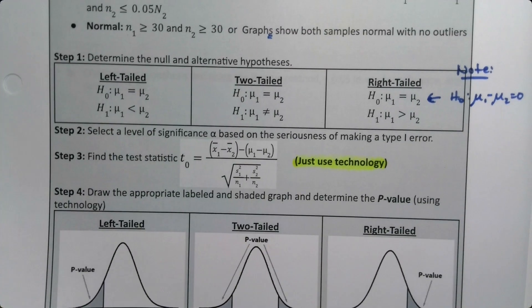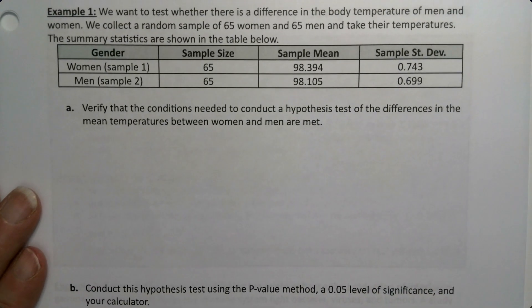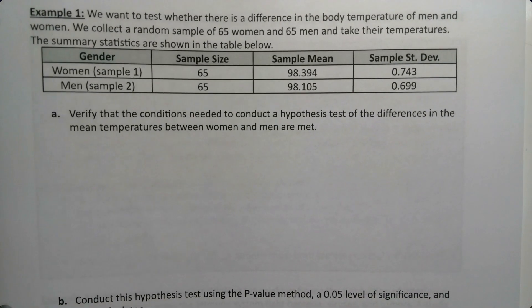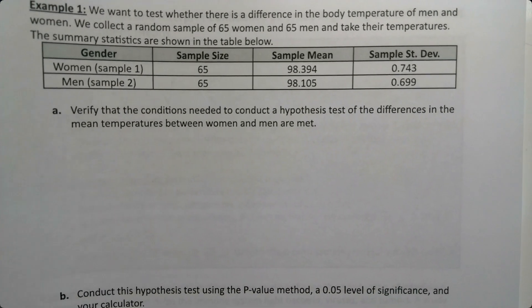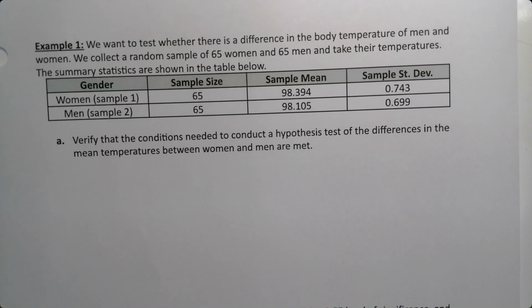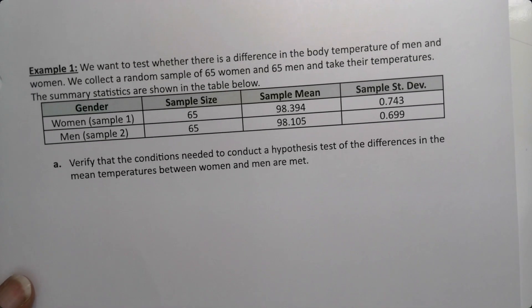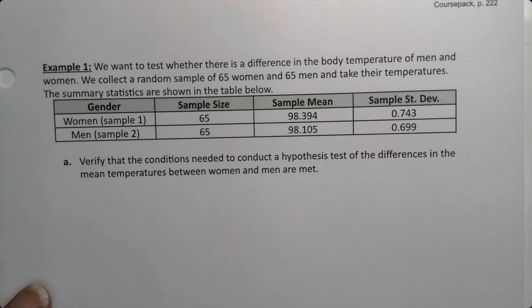Let's look at an example. We want to test whether there is a difference in the body temperature of men and women. We collect a sample of 65 women and 65 men and take their temperatures. The studies' summary statistics are shown in the table below. We have different sample sizes, different sample means, and different sample standard deviations.